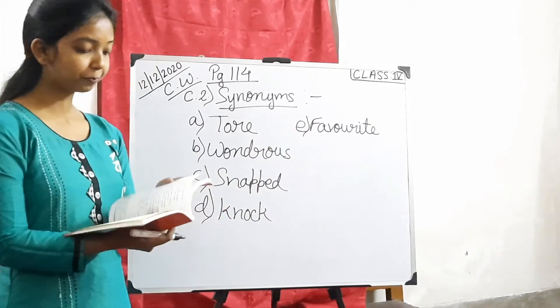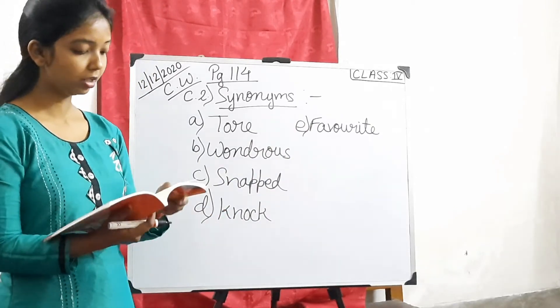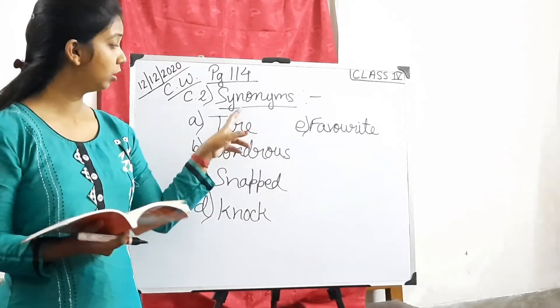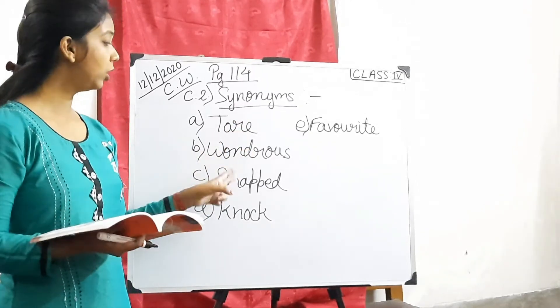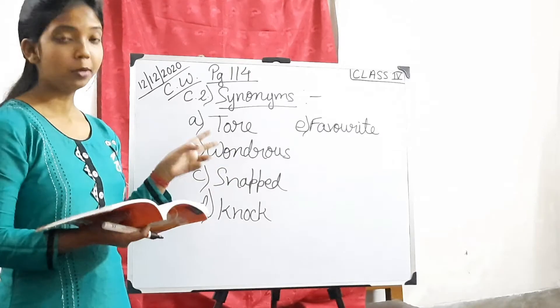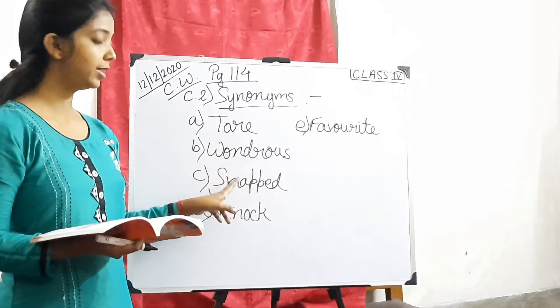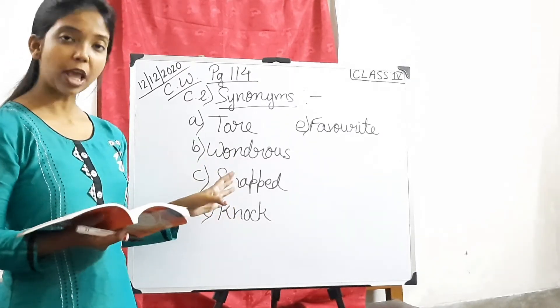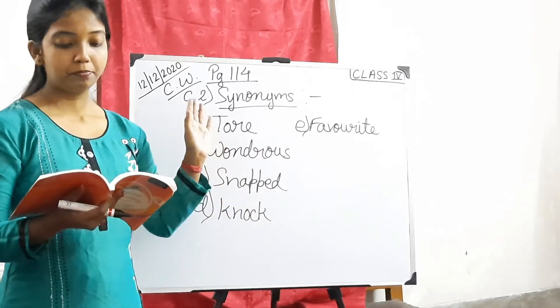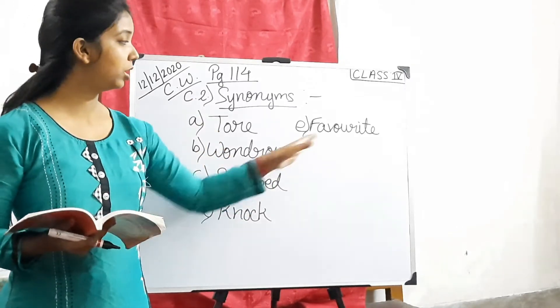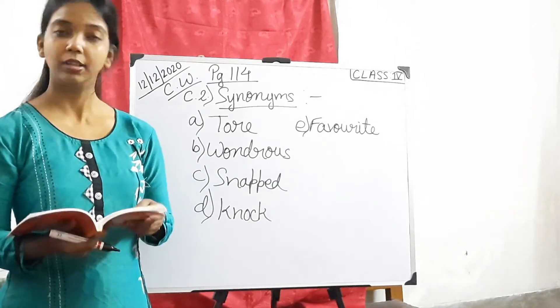So again I repeat. First one, ripped, synonym is tore. Astonishing, synonym is wondrous. Broke, the synonym is snapped. Ran, the synonym is knock. Preferred, the synonym is favourite. Clear?